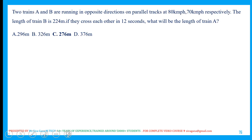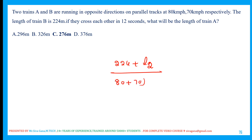Two trains A and B running in opposite directions: using the relative speed concept, one train's length is 224 and the other train's length is L2. Both are moving in opposite directions. Converting relative speed from kmph to meters per second, they cross each other in 12 seconds. Using distance divided by speed to get time, and using the on-screen calculator, L2 is found to be 276.